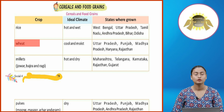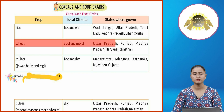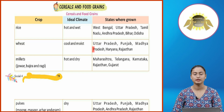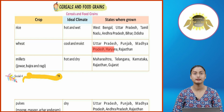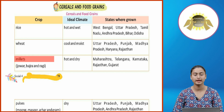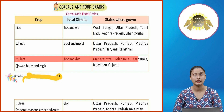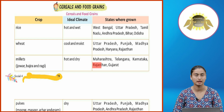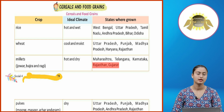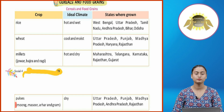Wheat grows in a cool and moist climate, mainly in Uttar Pradesh, Punjab, Madhya Pradesh, Haryana, and Rajasthan. Millets — Jowar, Bajra, Ragi — grow in a hot and dry climate in Maharashtra, Telangana, Karnataka, Rajasthan, and Gujarat. Pulses — Moong, Masoor, Arhar, and Gram — grow in dry conditions.